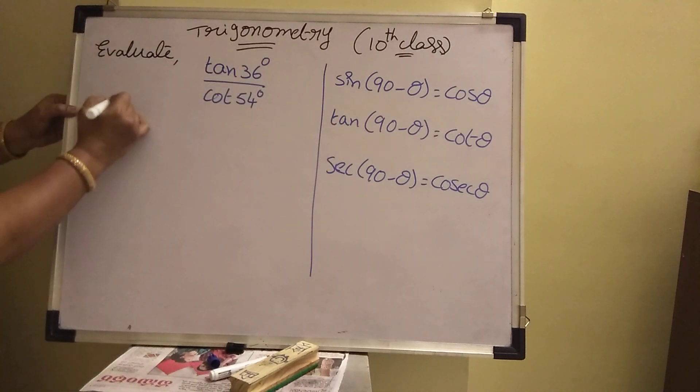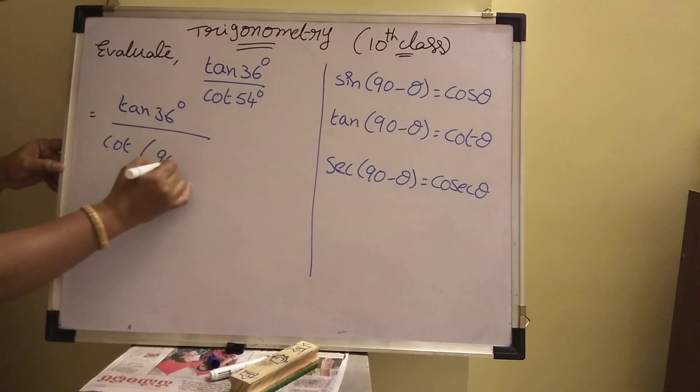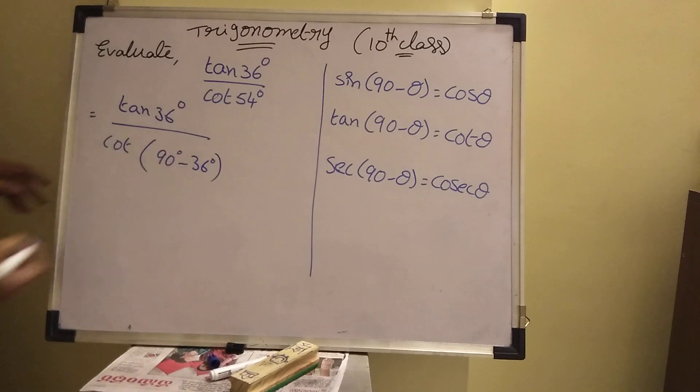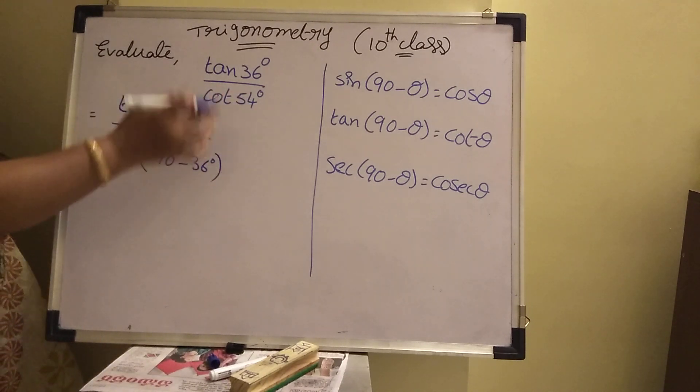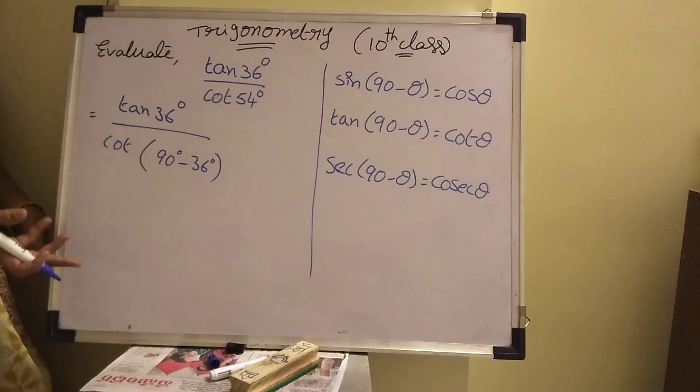36 plus 54 is 90. That's why here, anywhere complementary angle, then convert into any 1 angle. Then tan 36 degrees is divided by cot of 54, then you write 90 minus 36 degrees.